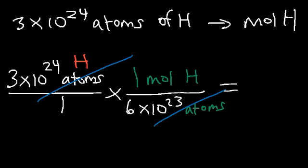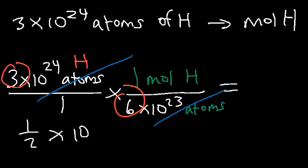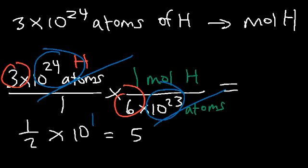So: 3 divided by 6 is one half, giving us 1/2 times 10 to what power? We have 10 to the 24 divided by 10 to the 23 — when dividing with a common base, subtract the exponents. 24 minus 23 is 1, so we have 1/2 times 10 to the 1. Half of 10 is 5, so the answer is 5 moles of hydrogen.